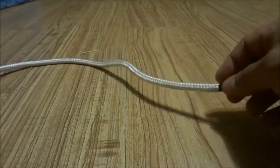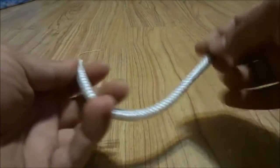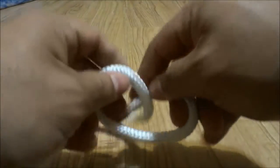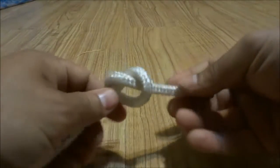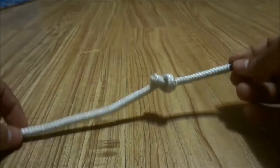So the first thing that I am going to do is I am going to tie a simple overhand knot at the end of the rope and this will act as a stopper.